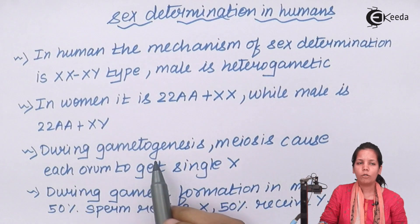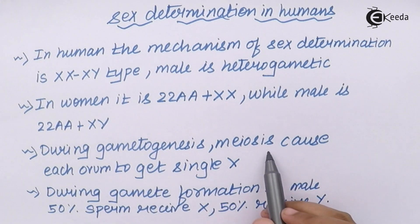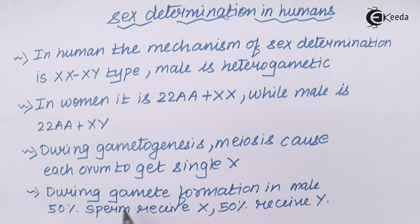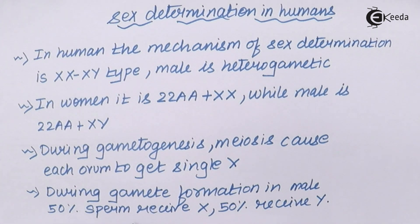During gametogenesis, or simply during gamete formation, meiosis causes each ovum to get a single X chromosome. During gamete formation in males, 50% of the sperm get the X chromosome whereas 50% of the sperm get the Y chromosome.